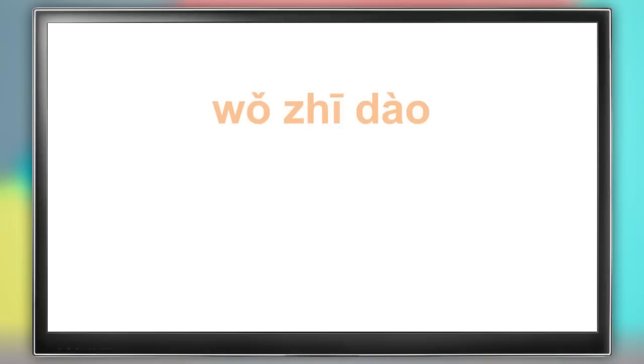Now let's learn how to say, I know. It's wǒ zhī dào. Wǒ zhī dào means I know.